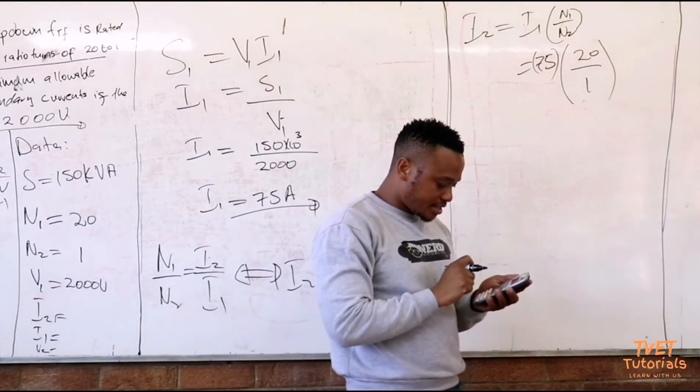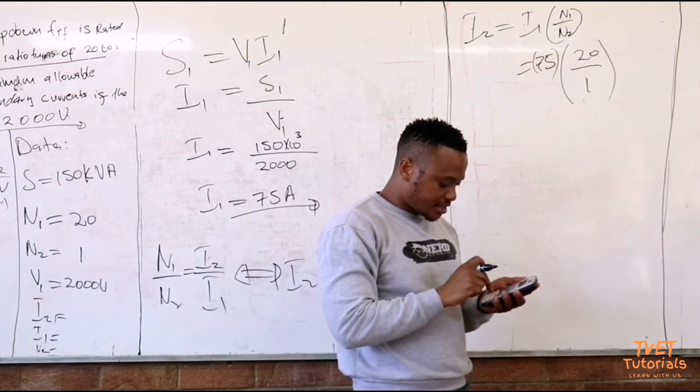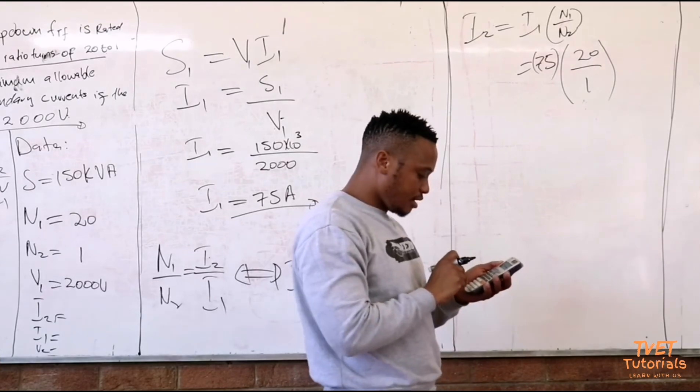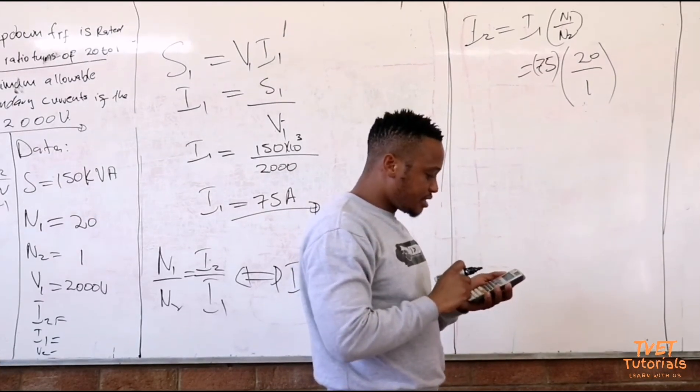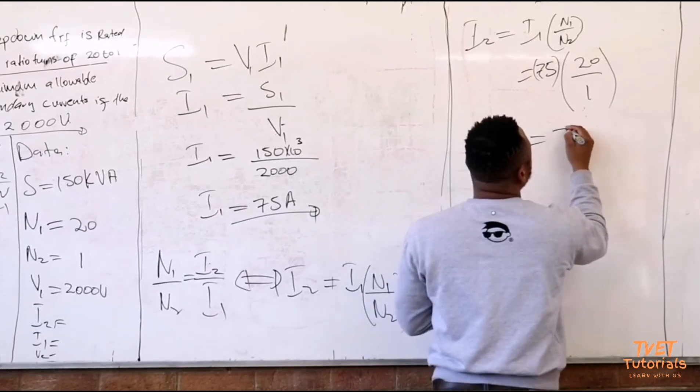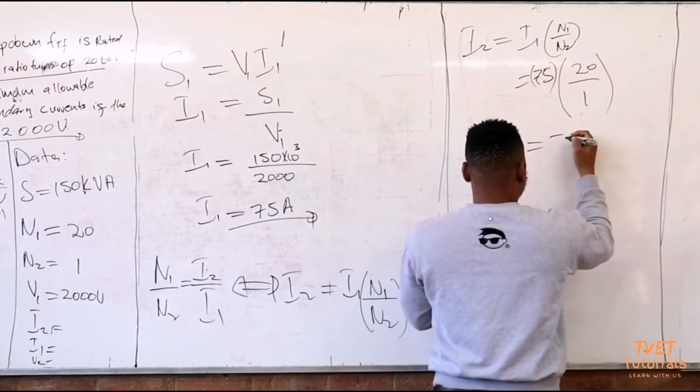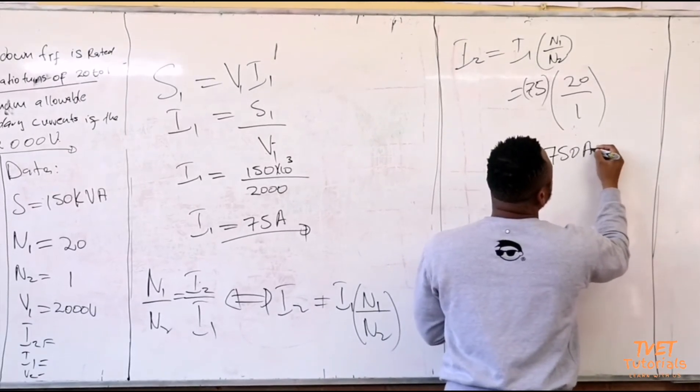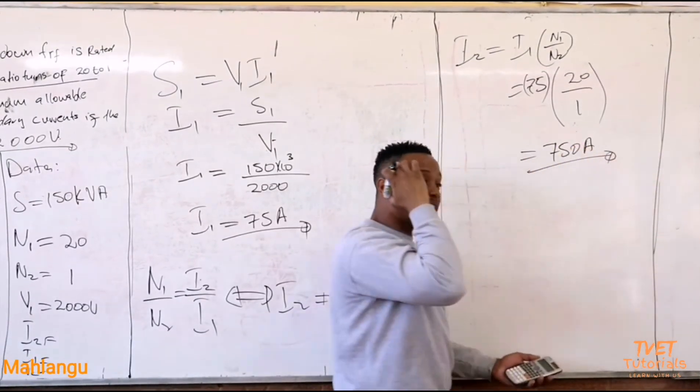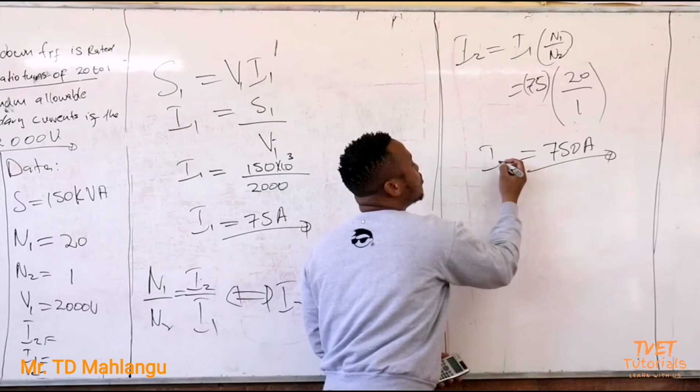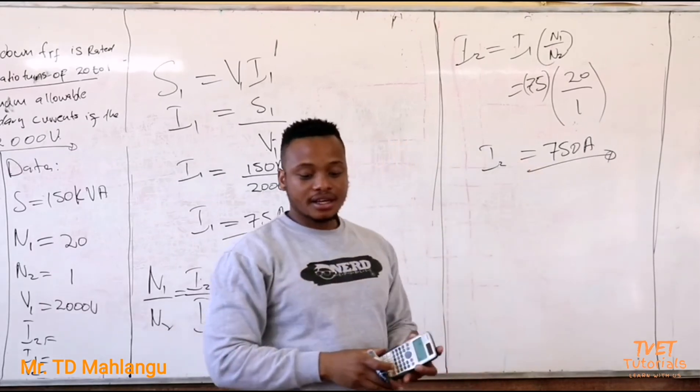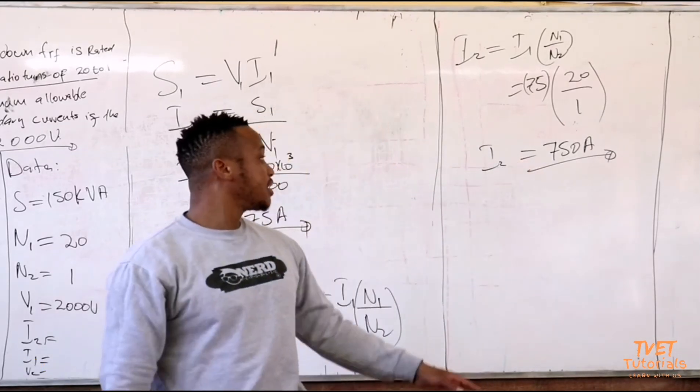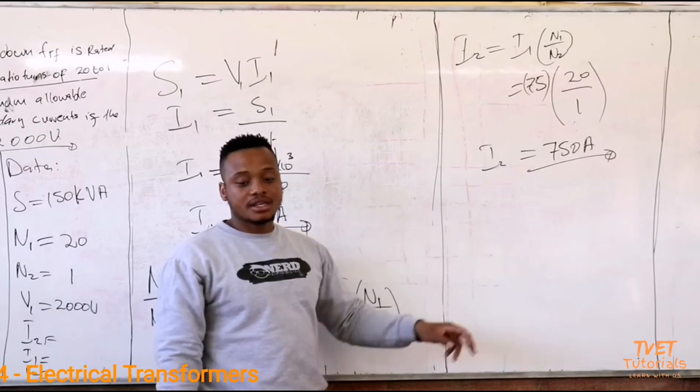You will get 75 times 20, which is equal to 750 amperes. So that is the maximum allowable current that the load can draw on the secondary windings.